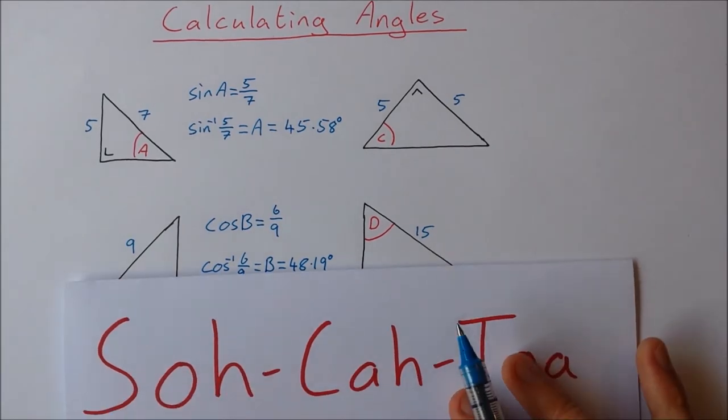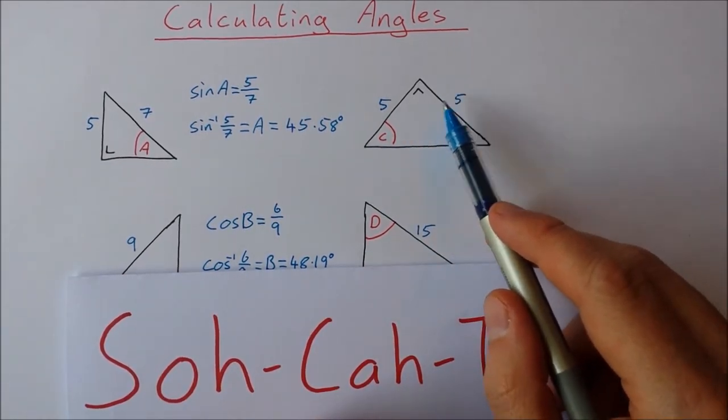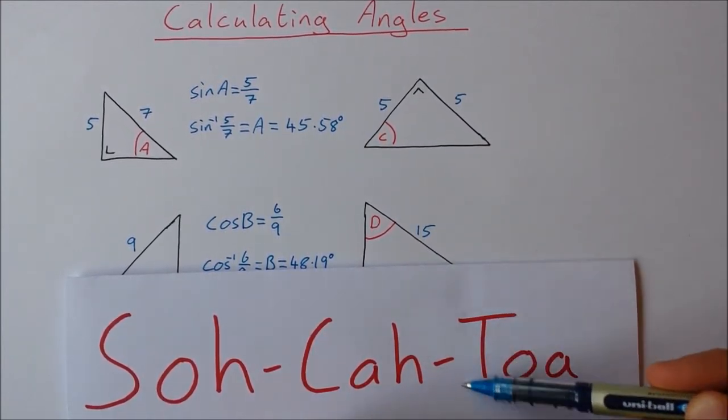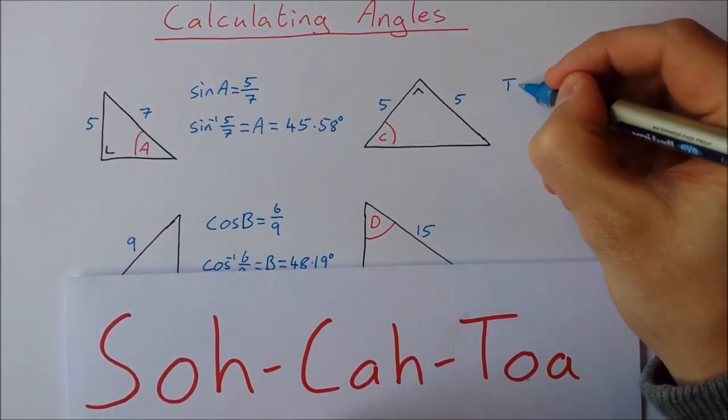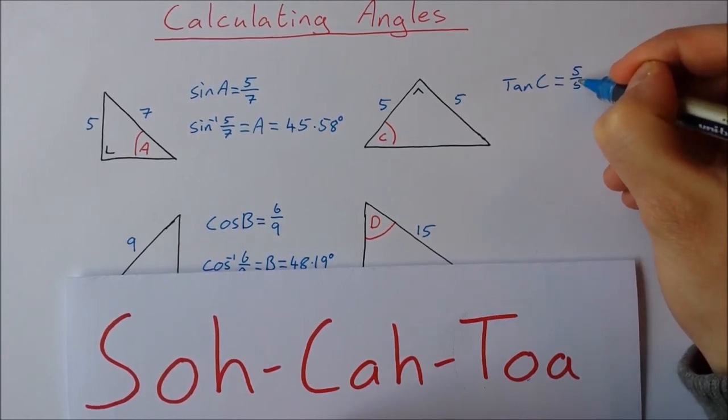Okay this one here. Angle C. Now I have the opposite side and I have the adjacent side. So opposite and adjacent means I'm going to use tan. Tan is opposite over adjacent. So the tan of C is equal to 5 over 5.